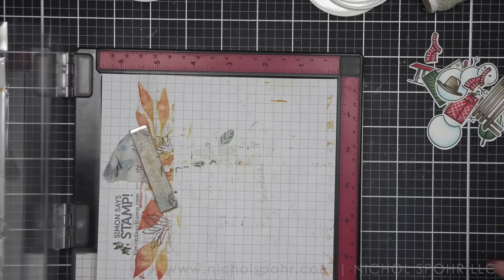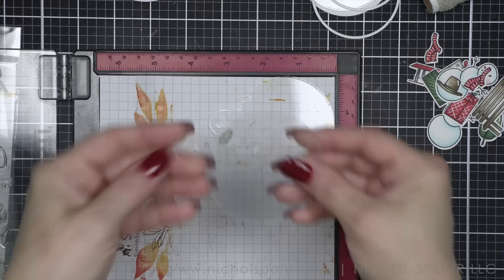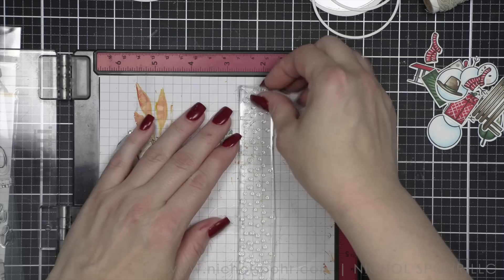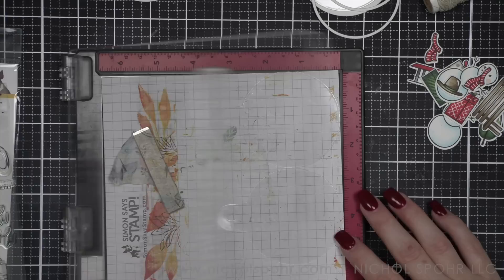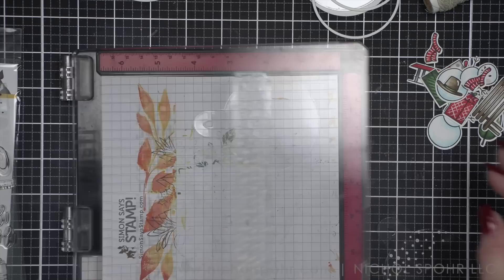Now we're going to take the acetate layers and I can do two at once with the border die. Something I really love in this stamp set is that there is a falling snow border and then there's also a little cluster of snowflakes, which I ended up not using.